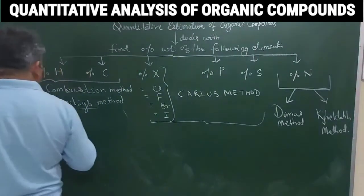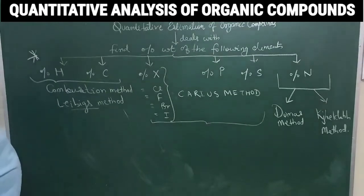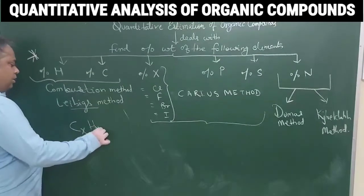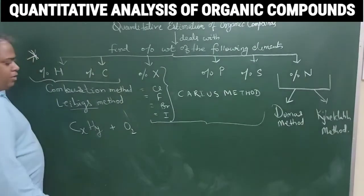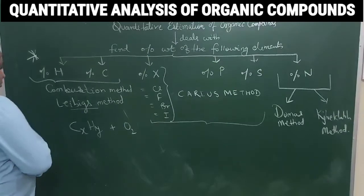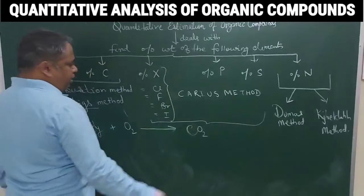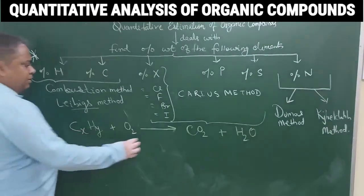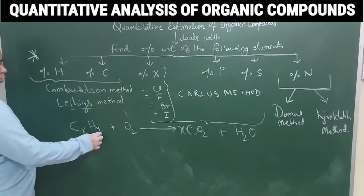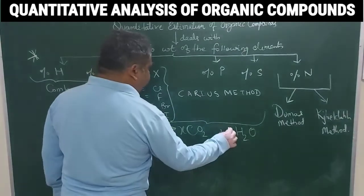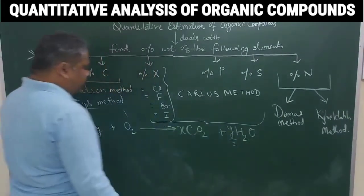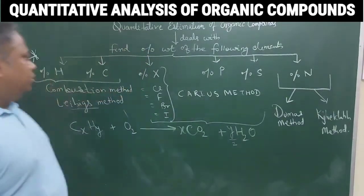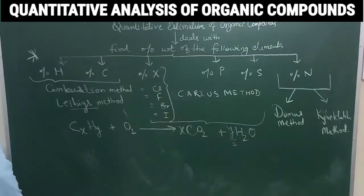Today our topic of discussion is the combustion method, also called Liebig's method. For example, if there is any hydrocarbon with X number of carbon and Y number of hydrogen, when it reacts with oxygen it forms CO₂ and H₂O. As much carbon as is present will come out in CO₂, and as much hydrogen as is present will come out in H₂O. To find out how much CO₂ and water is produced, we conduct an experiment.